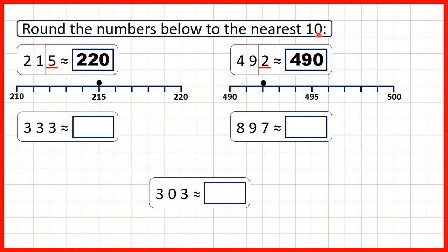Because digits to the left stay the same and we're rounding to the nearest 10, our ones digit turns into a zero. On a number line, counting up in multiples of 10, we would eventually get to 490, and then the next multiple of 10 is 500. Because 492 is closer to 490, that's why we round down. Looking at our ones digit helps us decide: if it's 4 or less, we round down, because that means it's closer to the previous multiple of 10.